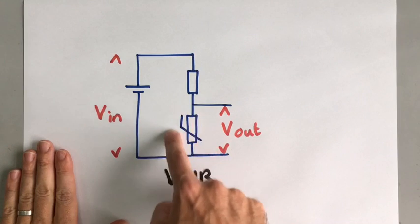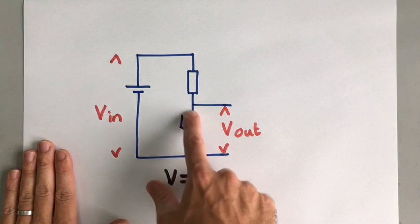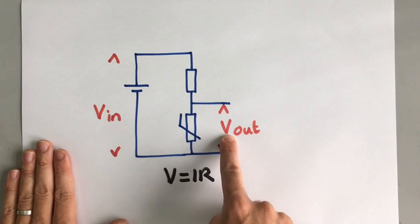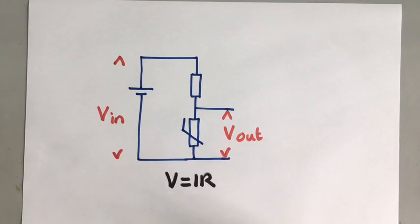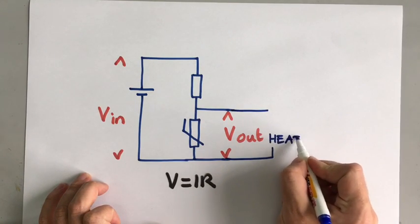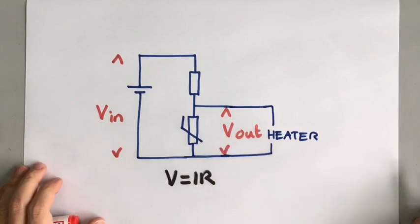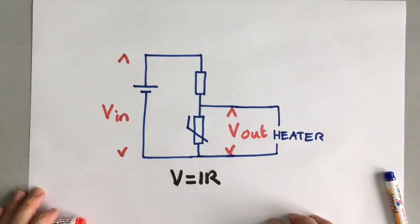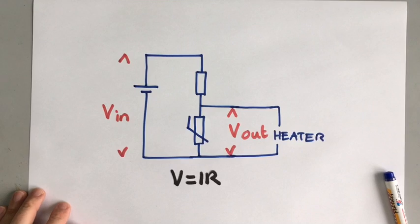So as we've just said with this thermistor, as the temperature decreases, resistance increases. And when resistance increases, voltage increases. So as the temperature goes down in the room, this voltage gets bigger and bigger and bigger. So what you could do with this circuit is you could attach some sort of heater. And the heater would heat the room. The colder it got, the more power would go to the heater, so the hotter the heater would get. And so in that case, the colder the room, the more the heater was turned on.